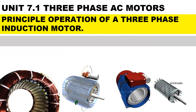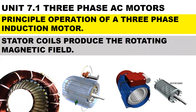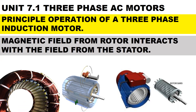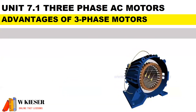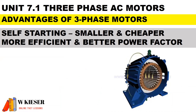In terms of the principal operation of a three-phase induction motor, the supply voltage is applied to the stator coils. The stator coils produce the rotating magnetic field. Then EMF is induced in the rotor, which causes current to flow inside the rotor, and the magnetic field from the rotor interacts with the field from the stator. The biggest advantage of three-phase motors compared to single-phase motors is that they are self-starting, smaller, cheaper, more efficient, and have a better power factor.